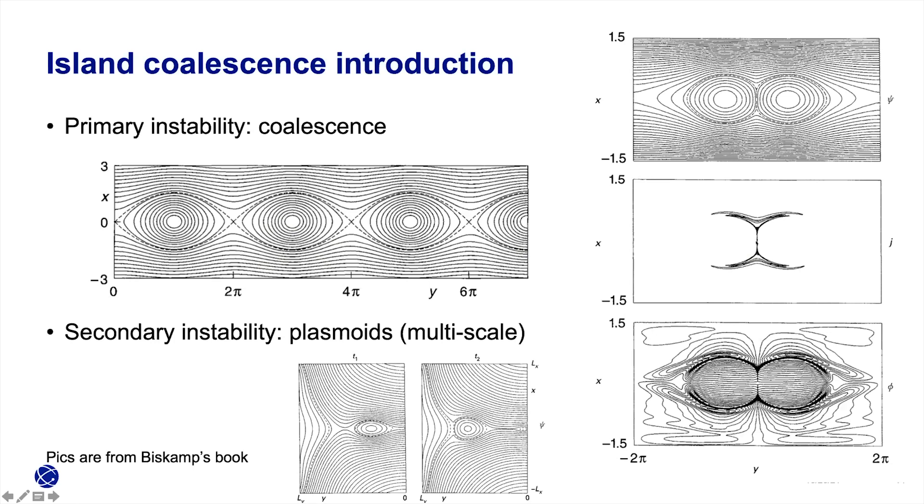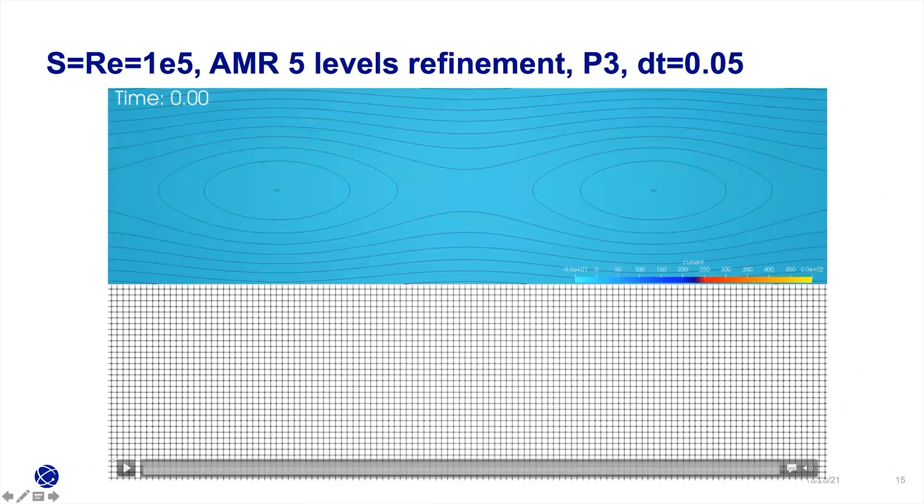This current sheet is the primary instability of this island collision. Then there's a secondary instability called plasmoid. Basically, this current sheet, when the Lundquist number increases, will break and form small islands, even smaller islands, then they climb into each other. It's a very multi-scale feature of this test.